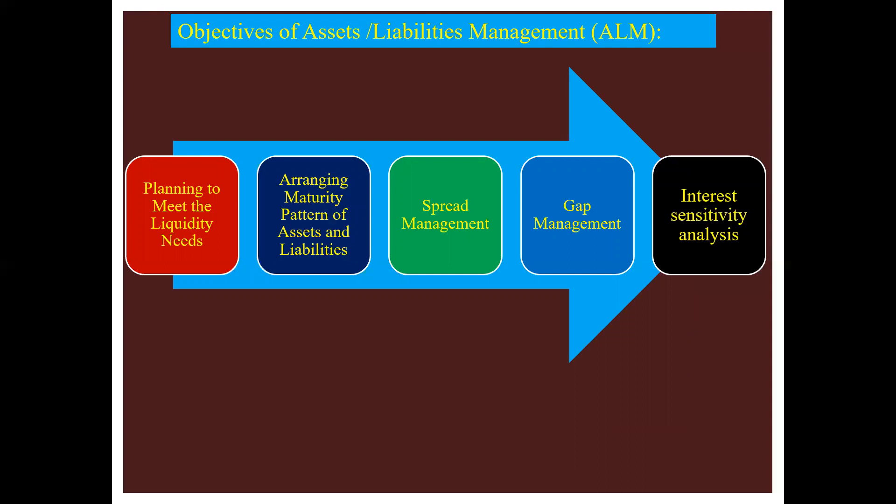The next thing we are going to talk about is the objectives of assets liabilities management, that is ALM. The various objectives are: first, planning to meet the liquidity needs; second, arranging maturity pattern of assets and liabilities; third, spread management; fourth, gap management; and the last one is interest sensitivity analysis. We will discuss each one in detail.